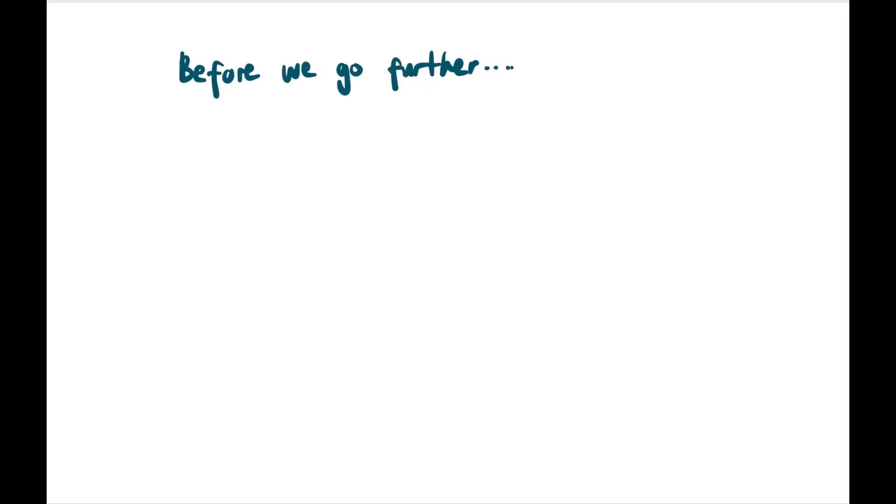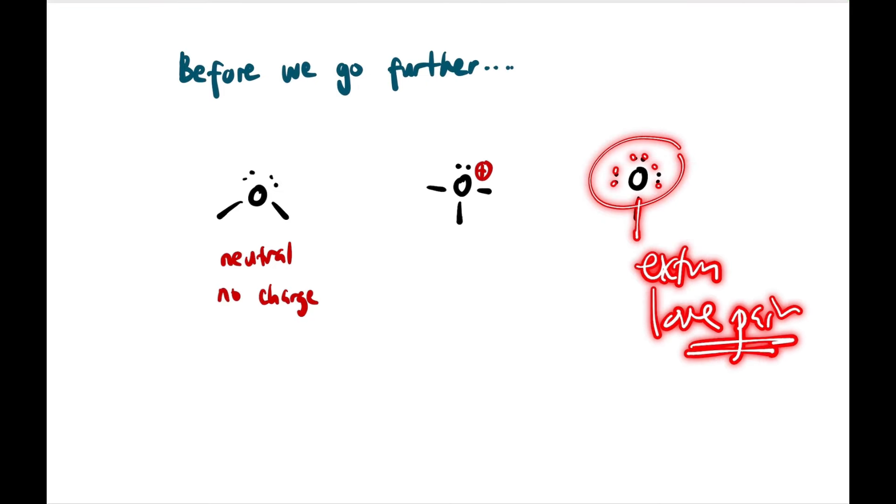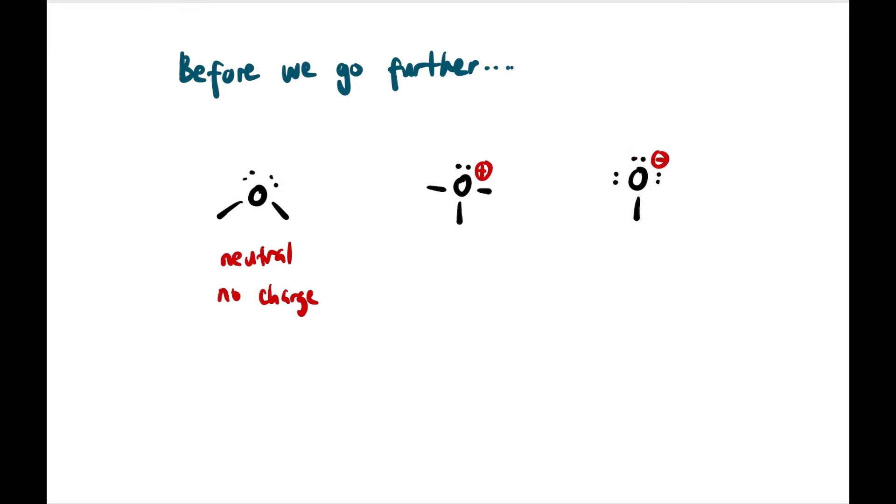Before we go further, we can say that if oxygen has two lone pairs and two bonds, it has no charge - it's neutral. If it has one lone pair and three bonds, it has an extra bond, so it's positively charged. Meanwhile, if it has three lone pairs, it has an extra lone pair, so it will be negatively charged.